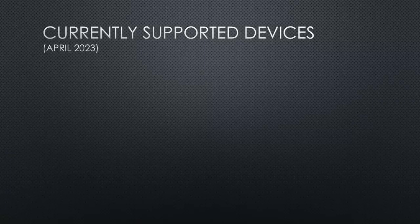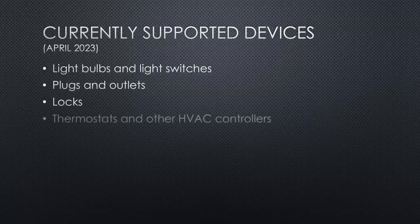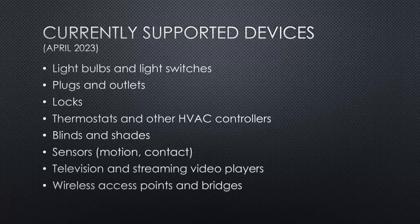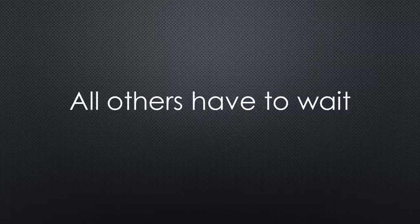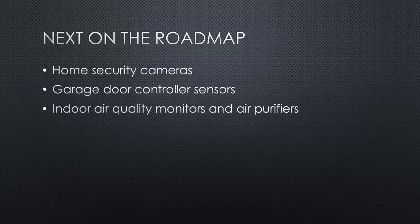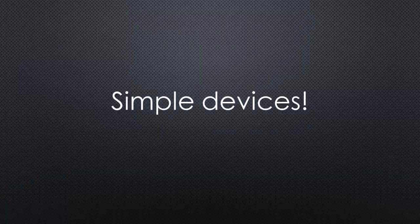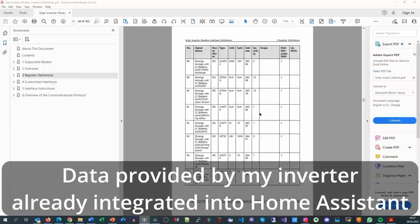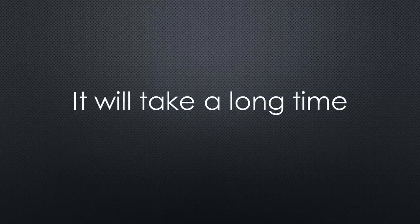Let's look at the currently supported devices: light bulbs and switches, plugs and outlets, locks, thermostats, blinds and shades, sensors, televisions and streaming video players, wireless access points and bridges. Manufacturers of other devices have to wait for a future release. Next on the roadmap are home security cameras, garage door controller sensors, indoor air quality monitors and purifiers, and smoke and CO2 detectors. These are pretty simple devices compared to my solar inverter, for example — so you can imagine how long it will take until all our home's machines speak Matter.